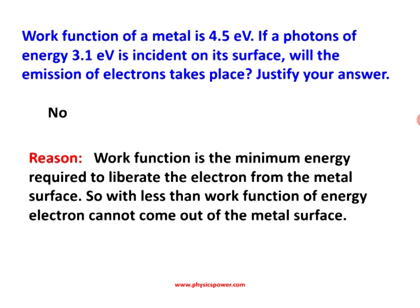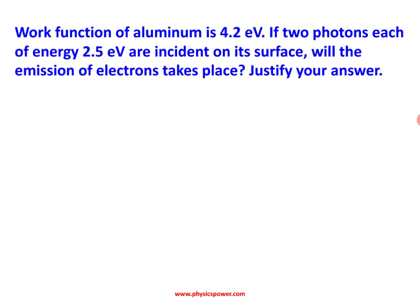Next question: the work function of aluminum is 4.2 electron volt. If two photons, each of energy 2.5 electron volt, are incident on its surface, will the emission of electrons take place? Justify your answer. The work function is 4.2 eV, so that much minimum energy is required. Here we have two photons.